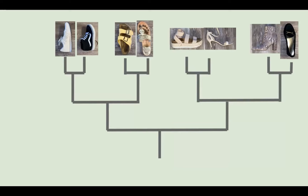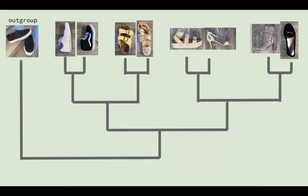All of these OTUs stem from an outgroup that I have here on the left. The outgroup is the root of the tree that diverged earlier than all of the other OTUs and serves as a common ancestor. In this example, the outgroup is the classic black sneaker because every shoe has some connection to it.